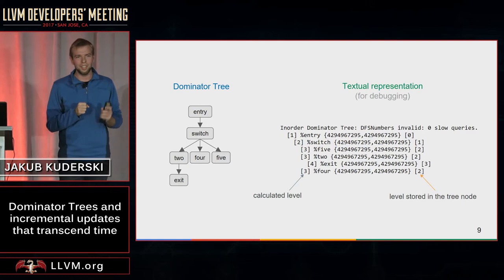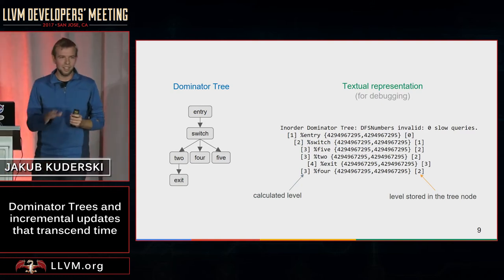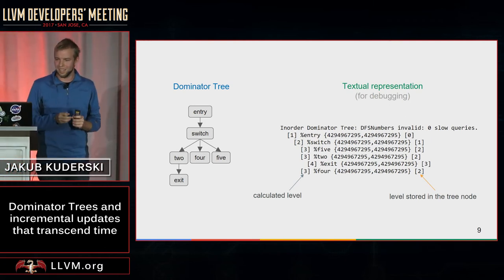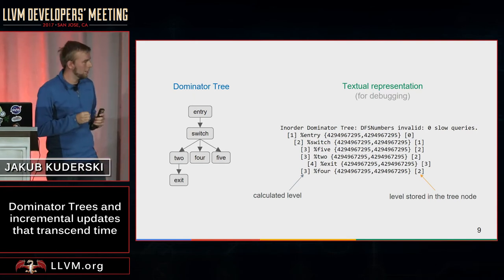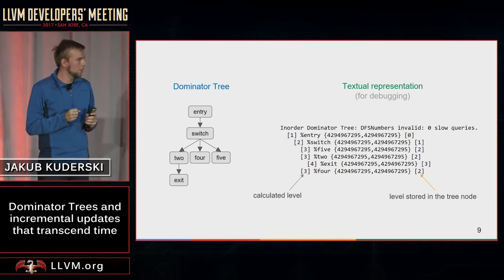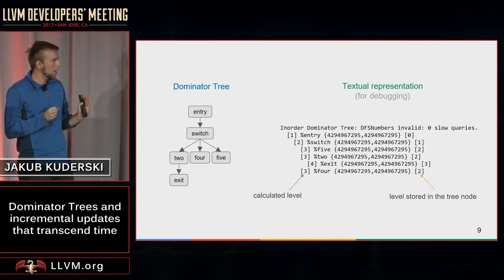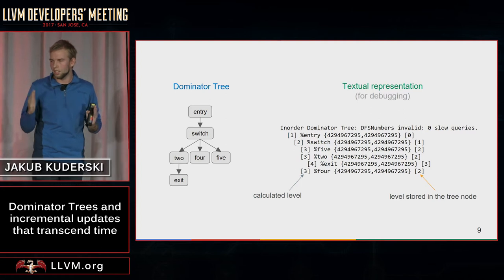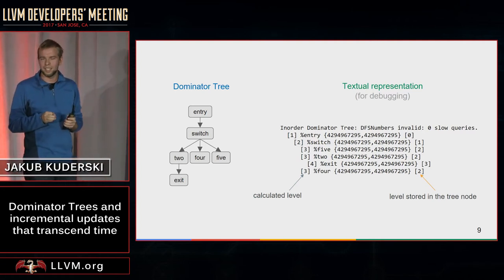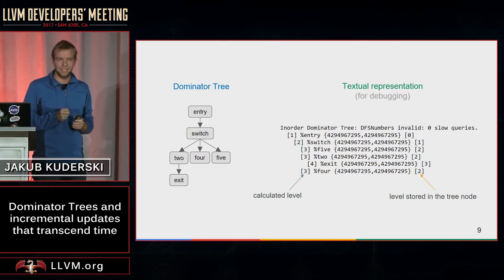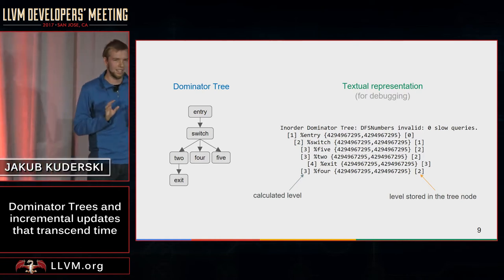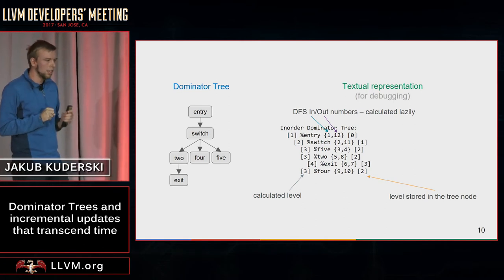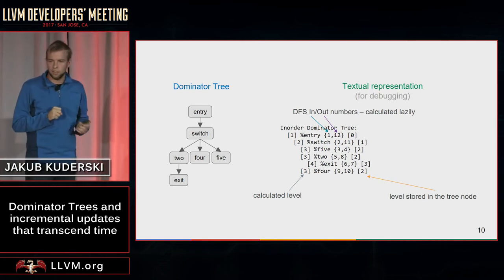When you print the dominator tree in LLVM, you get a representation that looks scary at first — lots of numbers and weird characters. On the left, the first number is the calculated level in the tree computed while printing. On the far right, you have the depth stored in the tree node itself. You may see that DFS numbers are invalid — that's not scary. DFS numbers are calculated lazily, meaning they're only calculated if you use the dominator tree enough times to make it worth it.